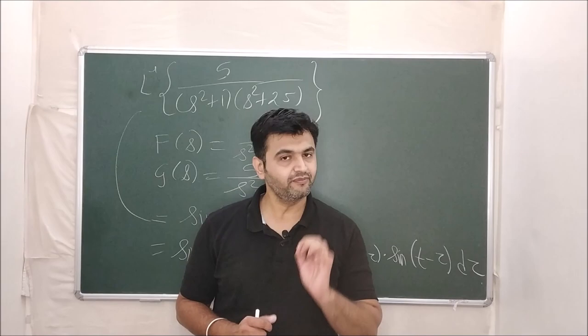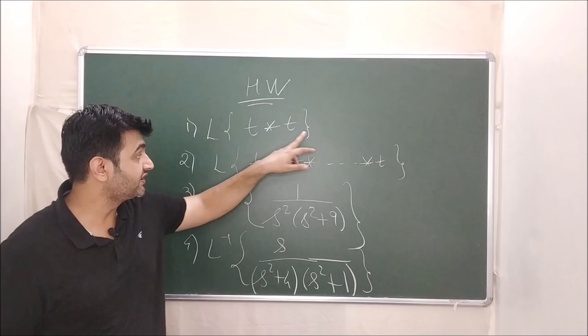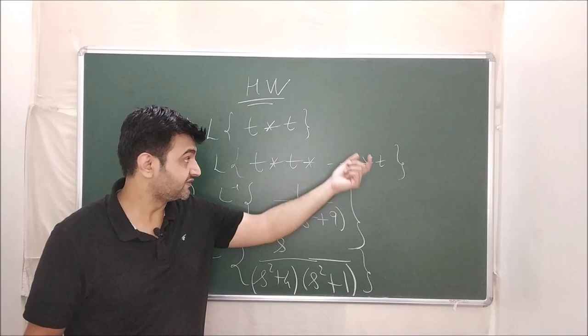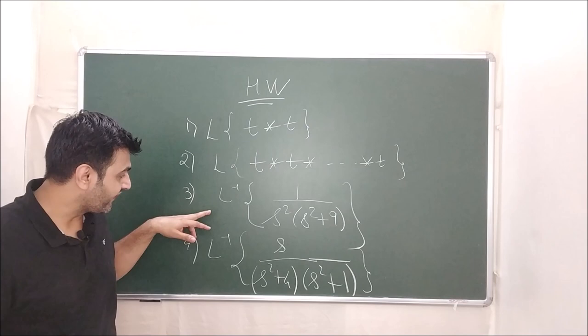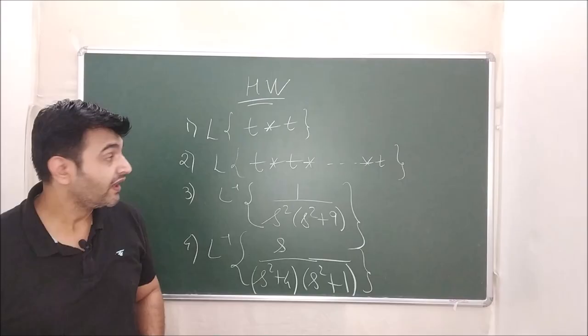Here are some homework problems for practice. First: find L{t★t} — the answer is L{t}·L{t} = 1/s⁴ by the convolution theorem. Try the others and also find the inverse Laplace of the given expressions by convolution. Practice is recommended. If the concept is clear, don't forget to like, share, and subscribe. Thank you.